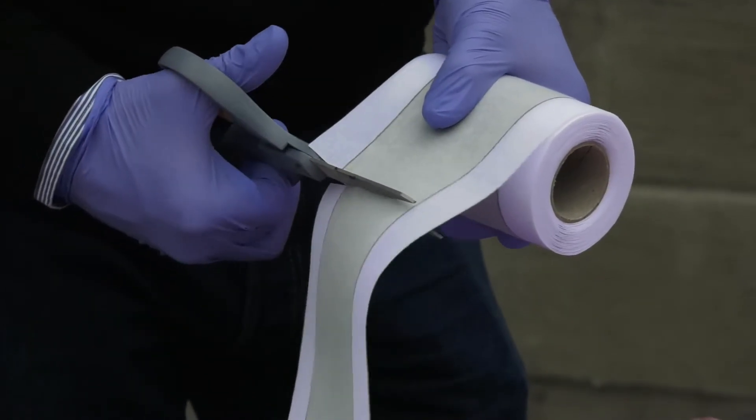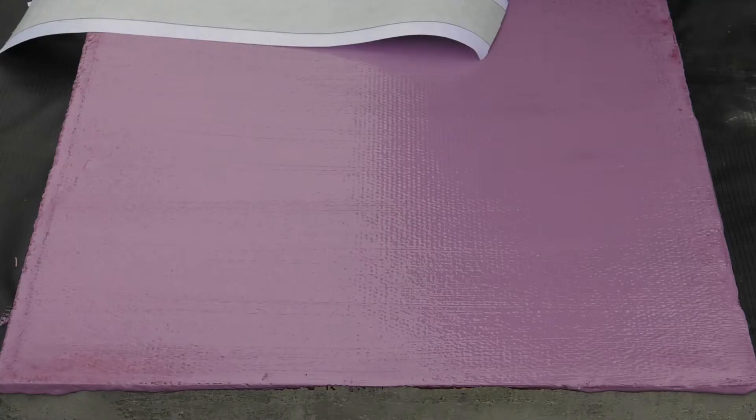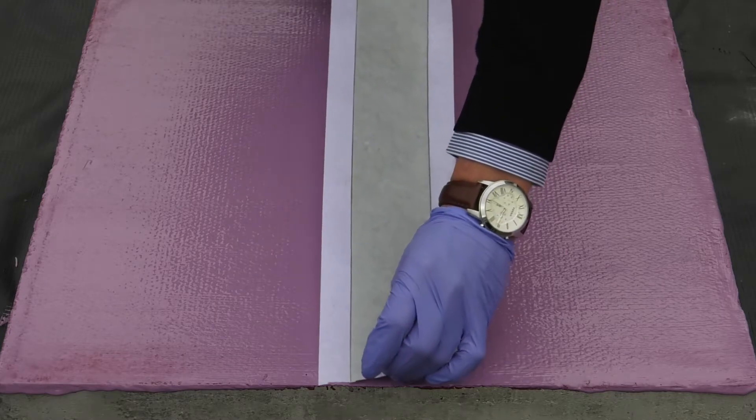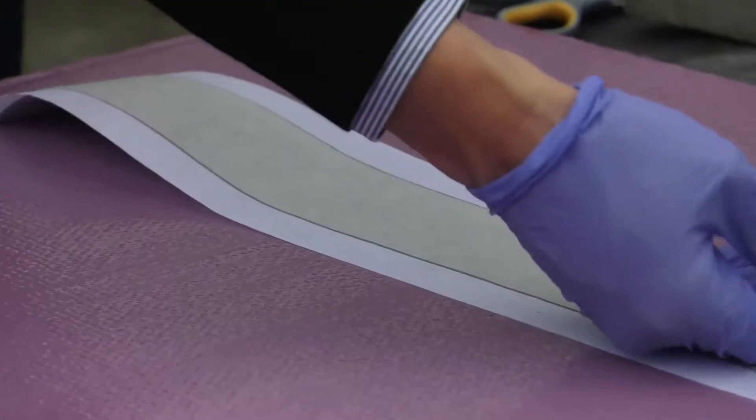Where there are construction joints within the substrate, these should be detailed with the joint tape. This should be bedded into the first coat application, ensuring that it is flat and well bedded.